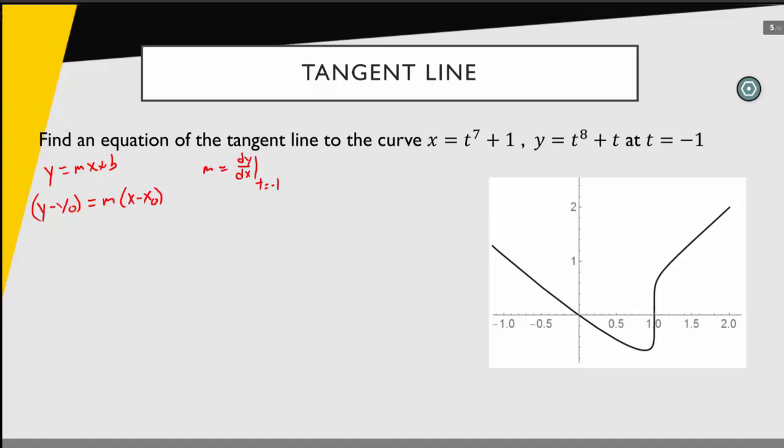Now what about y naught and x sub-naught? Those are just from some point that's on our curve. So in that case, we could say we're looking for the x and y values of some point on our curve, and we can get those by evaluating our set of parametric equations at t equals 1.